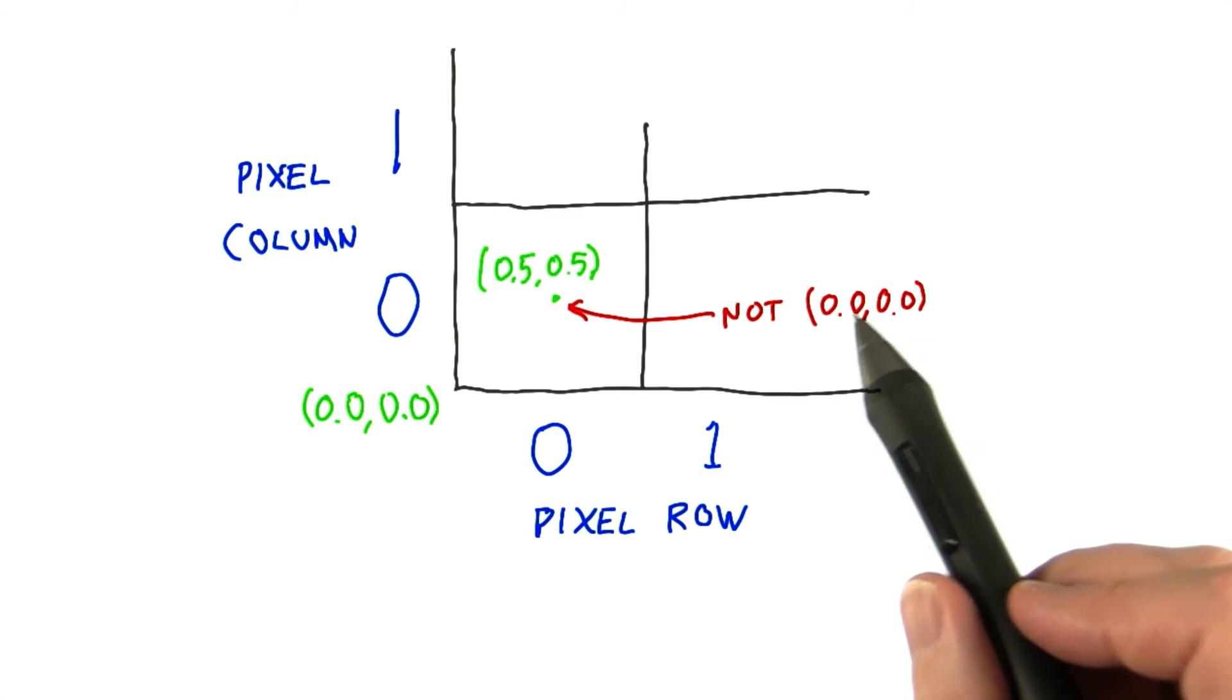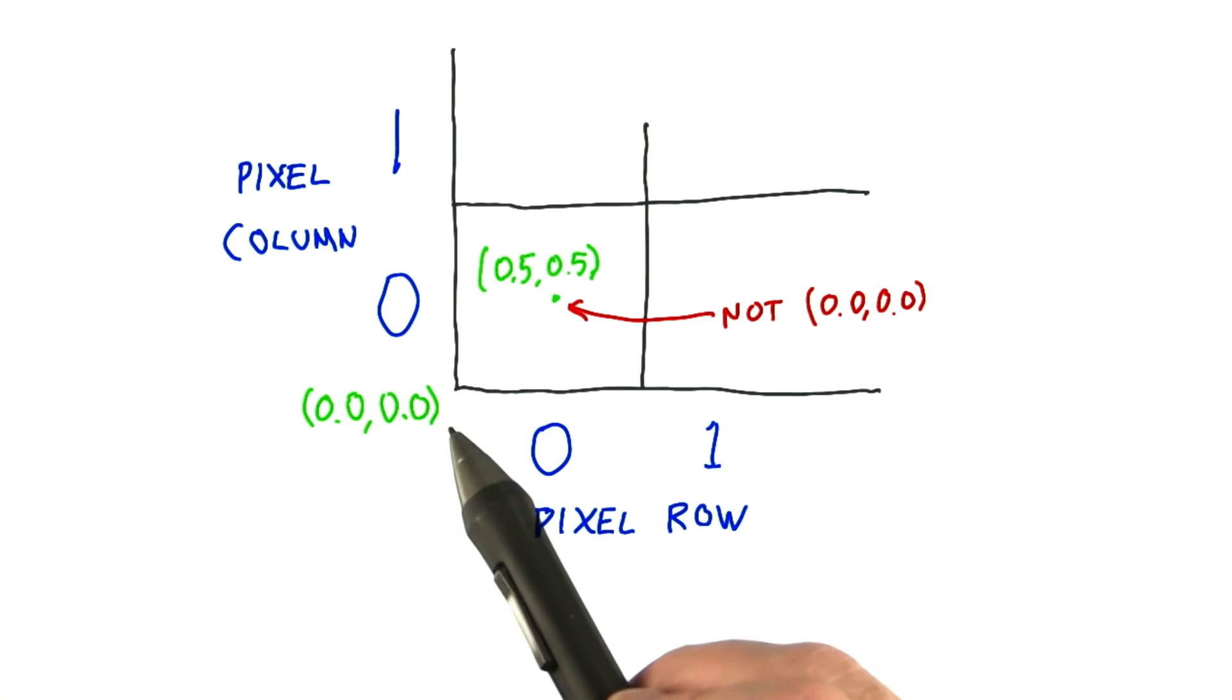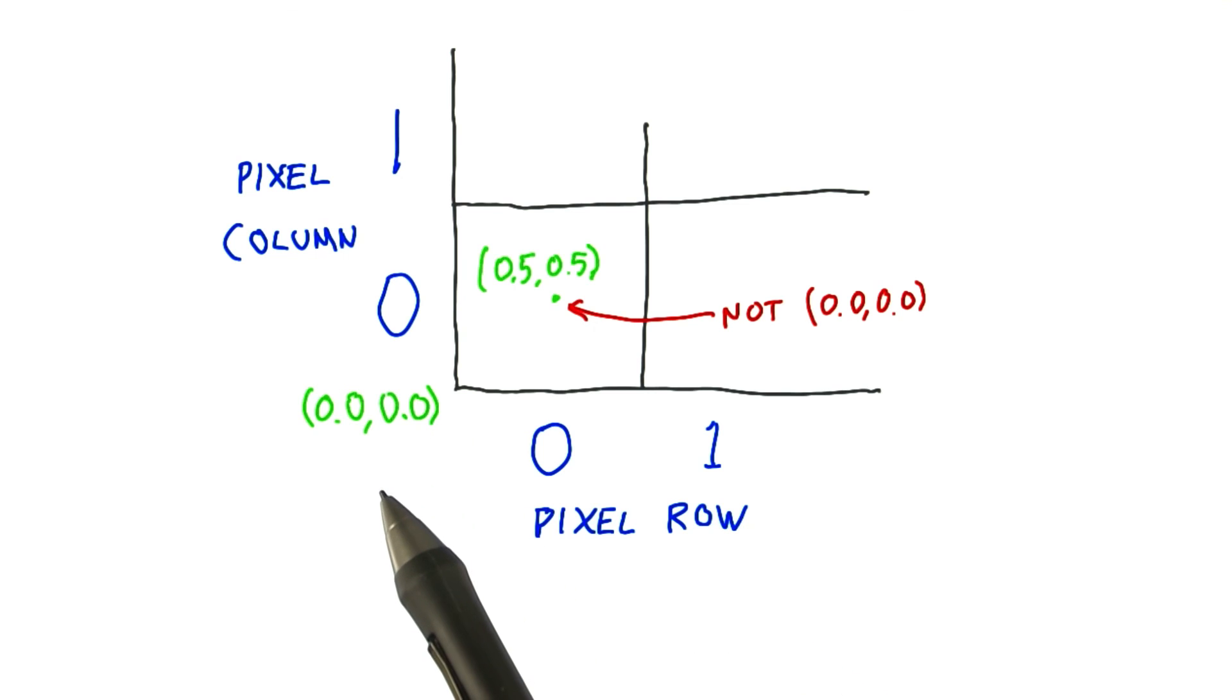Using 0,0 as the center of the pixel has the odd effect of making the lower left hand corner negative 0.5, negative 0.5. It makes simple conversion between floats and integers trickier much of the time.